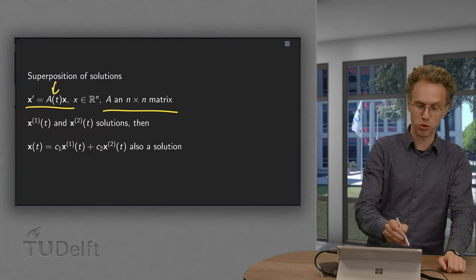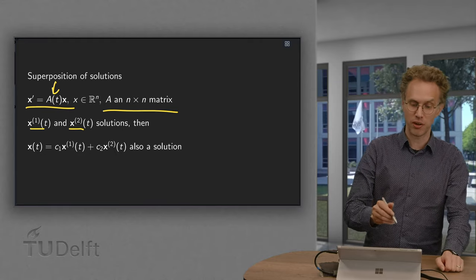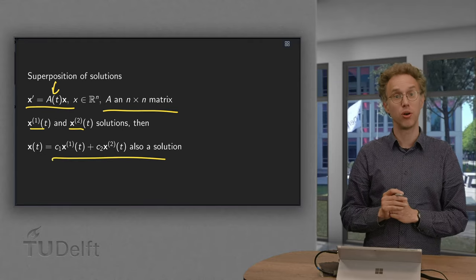And suppose we have found two solutions, x1 and x2. Then we have to show that any linear combination is also a solution.